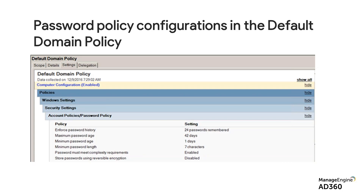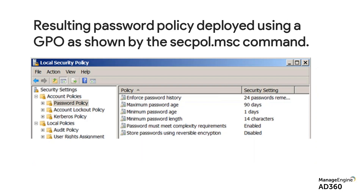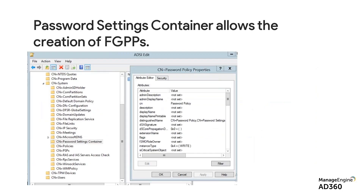If you've been a fan of domain password policies, you know the downsides. There are two ways of implementing it — the GPO way or the FGPP (fine-grained password policy) way. But the problem is it does not work on OUs, it doesn't take the organizational structure into consideration. Different sets of users need to be treated differently, yet these policies don't truly allow multiple password policies within the same domain — it's still a one-size-fits-all approach.